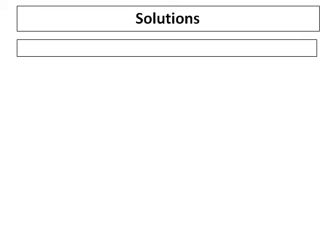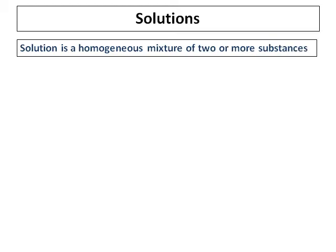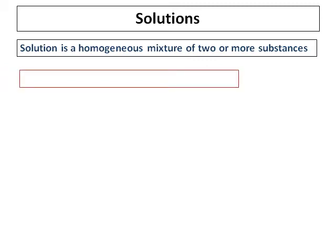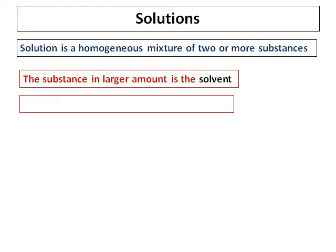This video is about solutions. A solution is a homogeneous mixture of two or more substances. When there are two or more substances, we need to define each one of them. The one which is present in a larger amount we call the solvent, and the one present in a lesser amount we call the solute.